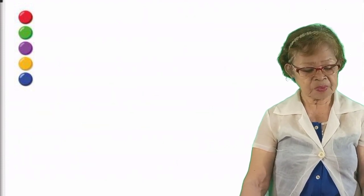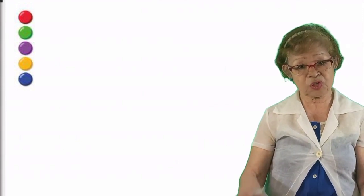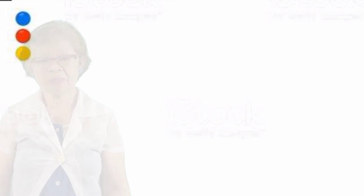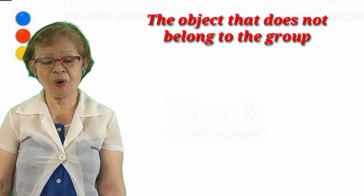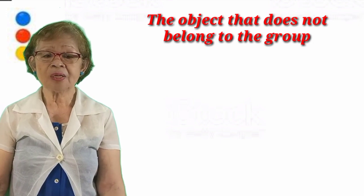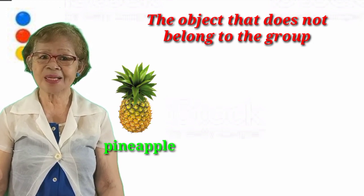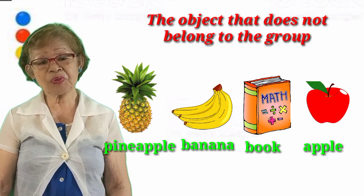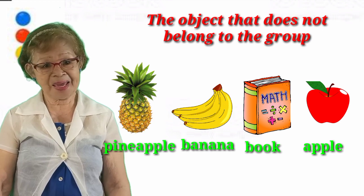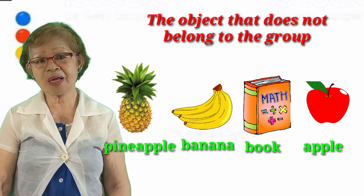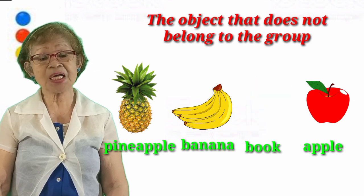We go now to our next lesson: the object that does not belong to the group. Now we start with the objects. First we have the pineapple, and then the banana, but we have a book, and then an apple. What is the object that does not belong to the group? It's the book, because the pineapple, the banana, and the apple are fruits, but the book is not. So the book does not belong to the group.